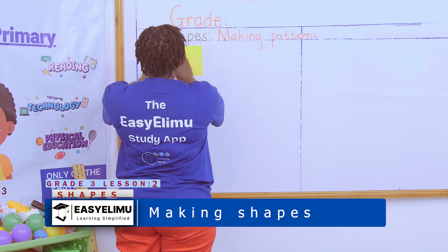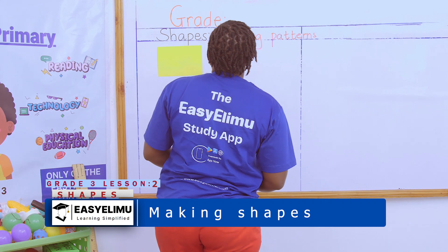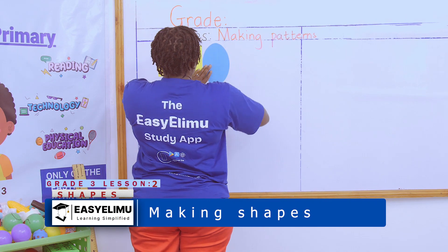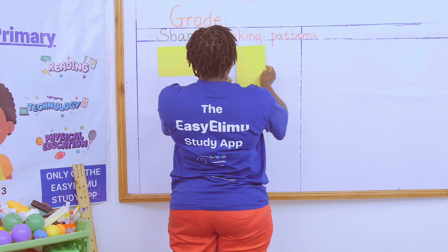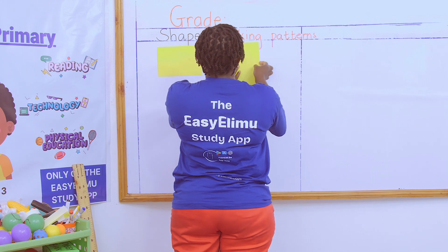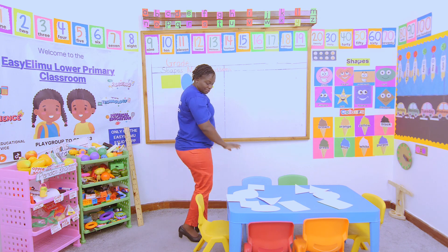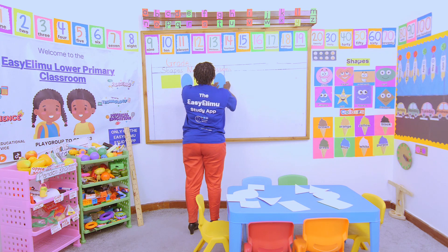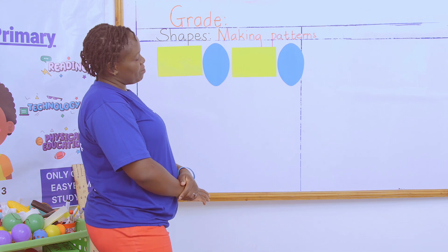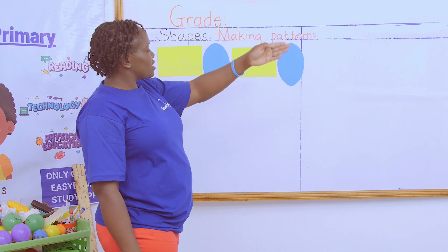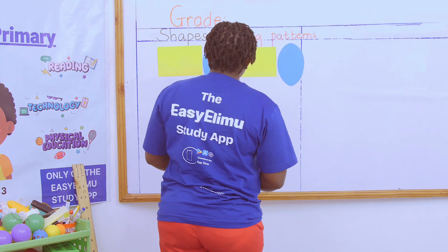So if I'm told to make a pattern, I can look at this and decide how my pattern will be. I put the rectangle, then the oval facing down, then the rectangle again, then the oval facing down. That is a very beautiful pattern. If you're told to complete that pattern, it will continue — rectangle, oval, rectangle, oval — until the end.